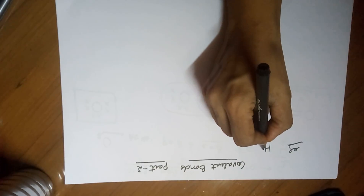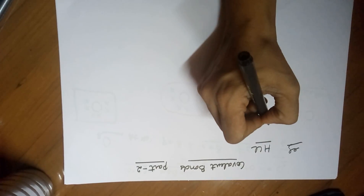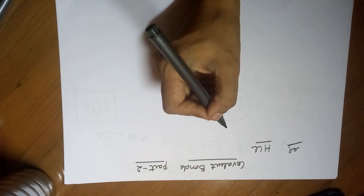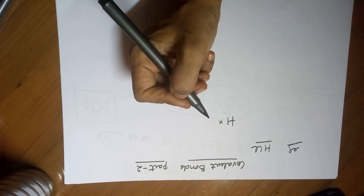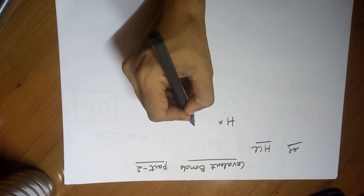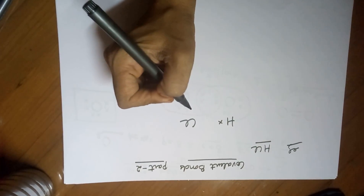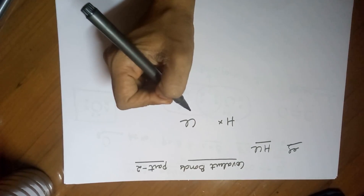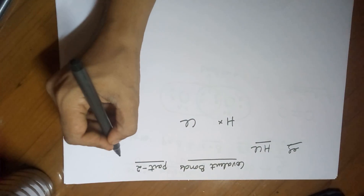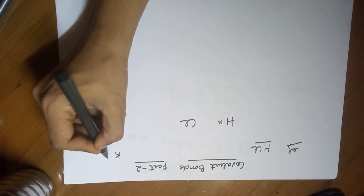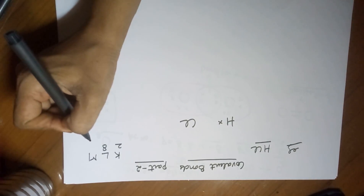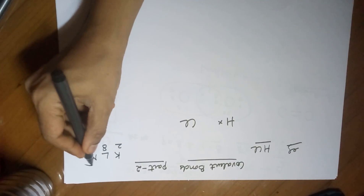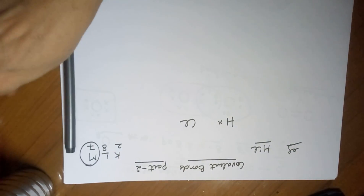The first example is hydrogen and chlorine, that is an HCl molecule. First of all, you need to write the Lewis dot structures for the same. Hydrogen has just one electron at the outermost shell. When we talk about chlorine, the atomic number of chlorine is 17. The electronic configuration for 17 electrons of chlorine is K, L, M shells: 2 in the first shell, 8 in the second — that makes 10 — you are left with 7, which are your valence electrons.